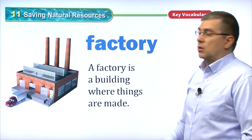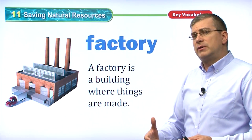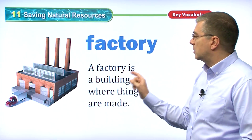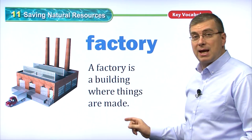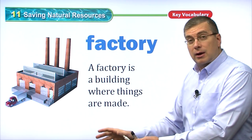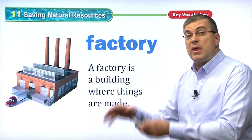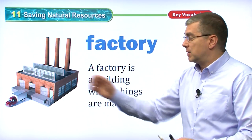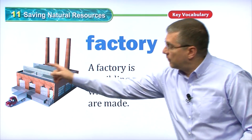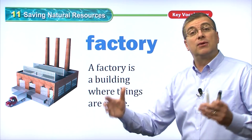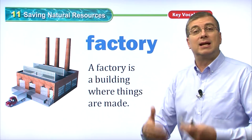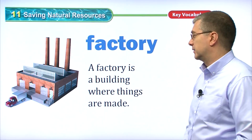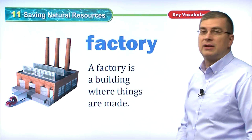When we recycle materials, they usually go to a factory. A factory is a building where things are made. If we recycle our cans, those cans go to a factory where they melt them down and make new cans. The same thing happens with plastic. We need those things to live our daily lives, but we need to be careful in our use of them.